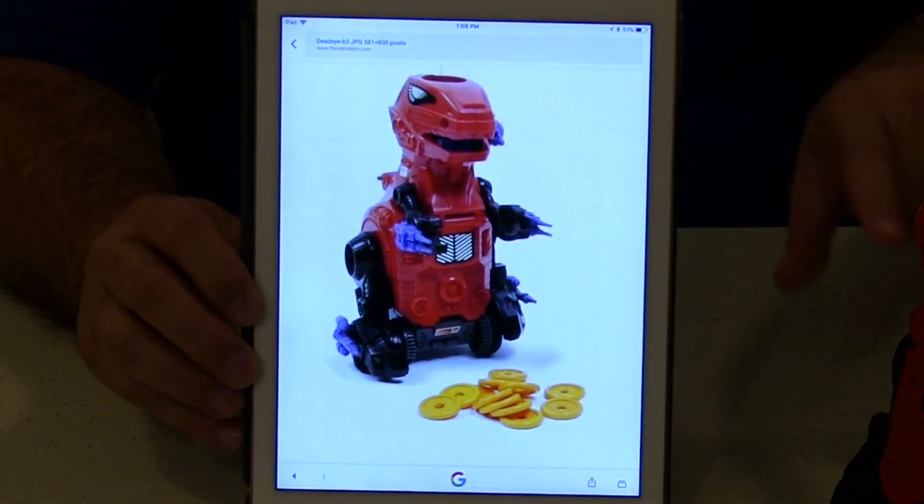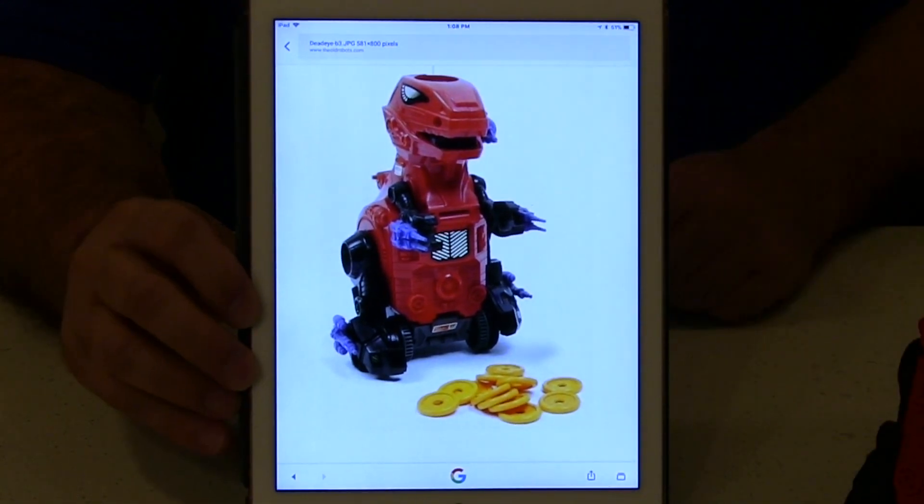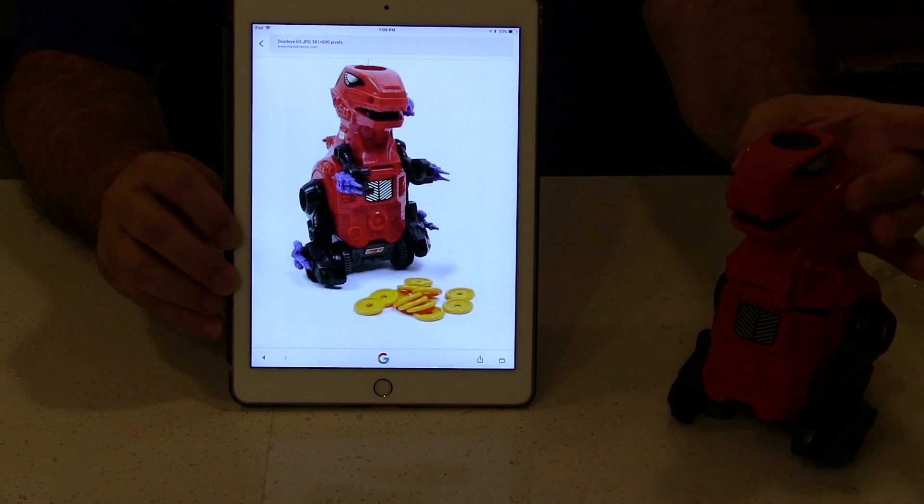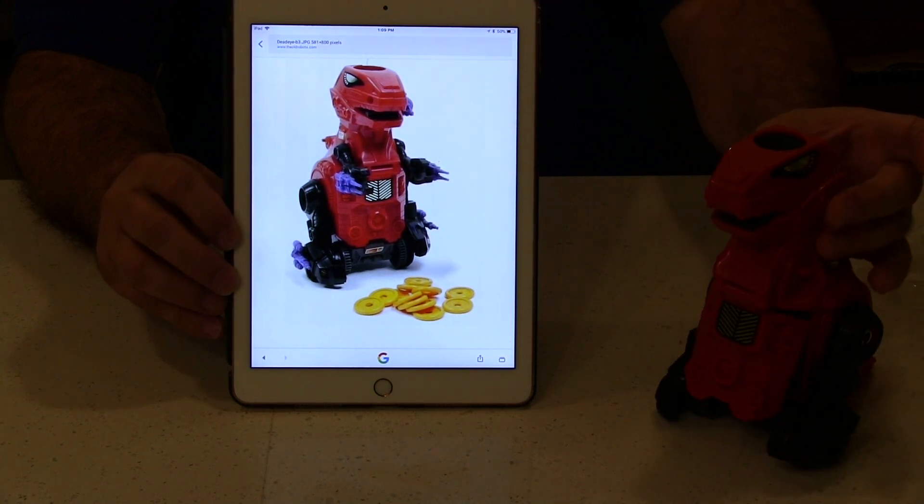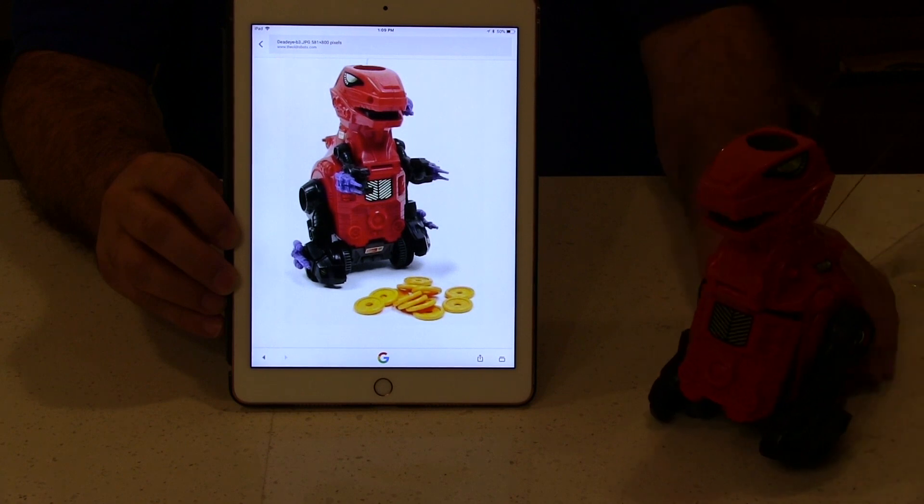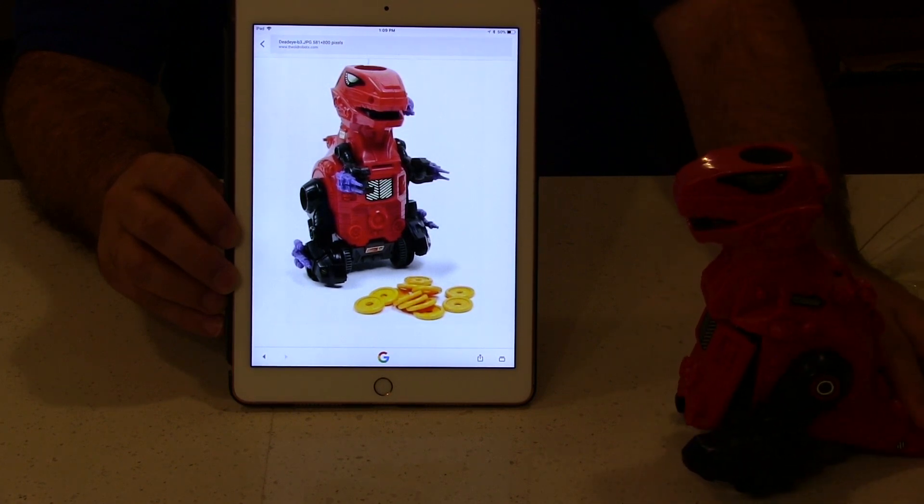As you can see, he's missing his arms and he's missing some guns that go on his head here, or not his head but his body, and his legs here. I think that's all that's missing from him though.